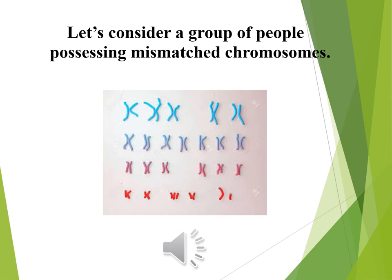If you also look at the bottom row, you'll see in one chromosomal pair there are three chromosomes — that would be Down syndrome, which we'll discuss later in the course. That's when a person has an extra chromosome — a trisomy. With that, we are done with this particular topic.